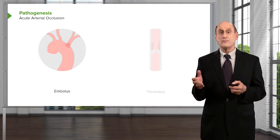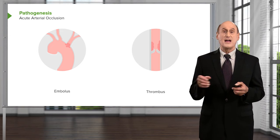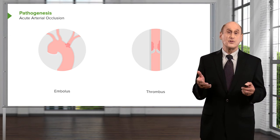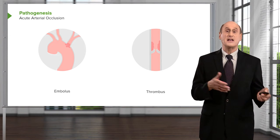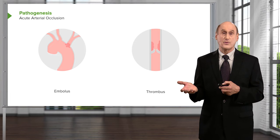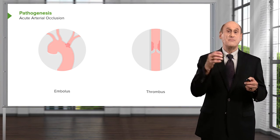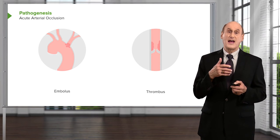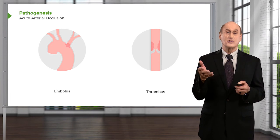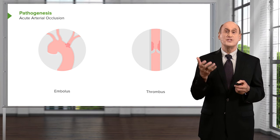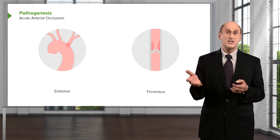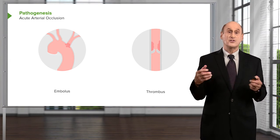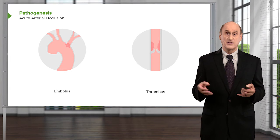Remember the term thrombus? That's a blood clot that forms on a vessel wall — it could be on the venous side, the arterial side, or in the left atrium. When that thrombus breaks off and flows in the bloodstream and causes mischief somewhere downstream, it's called an embolus.